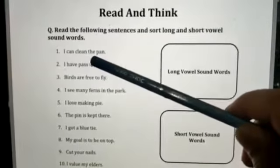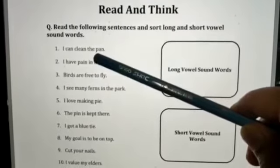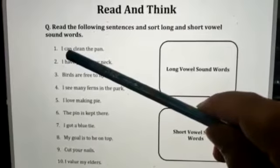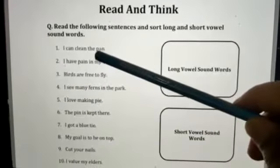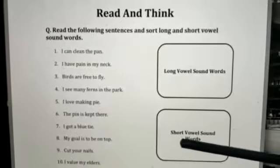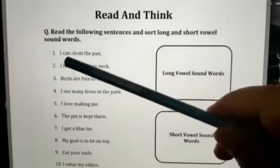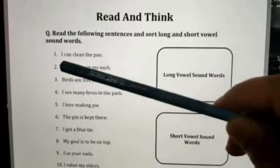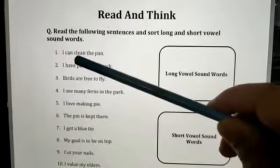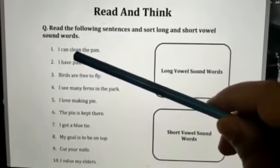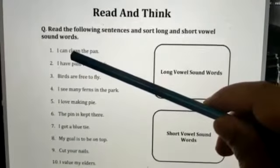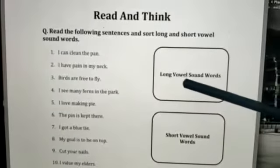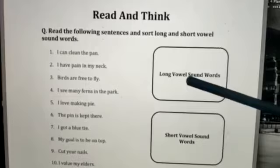Can you find the long vowel sound word and the short vowel sound word? You are right. C-A-N, can, and P-A-N, pan, are short vowel sound words. So can and pan you are going to write in this box. And this word clean is a long vowel sound word, and you are going to write it here in this bubble. Got it? Got the game?